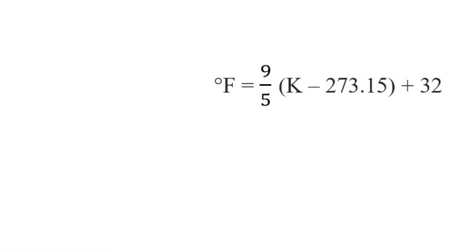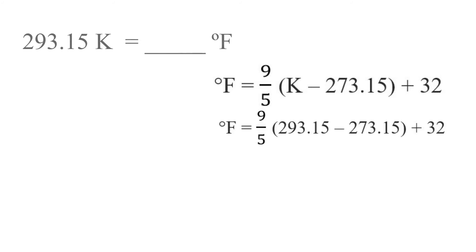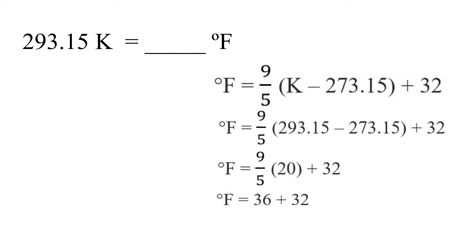Let us convert 293.15 Kelvin to degrees Fahrenheit. Using the equation: degrees Fahrenheit equals 9 over 5 times the difference between Kelvin and 273.15, plus 32. Plugging in the value, we get 9 over 5 times the difference between 293.15 and 273.15, plus 32. Subtracting: 293.15 minus 273.15 equals 20. Multiply 20 by 9 then divide by 5 equals 36. Adding 36 plus 32 equals 68. Therefore, 293.15 Kelvin equals 68 degrees Fahrenheit.